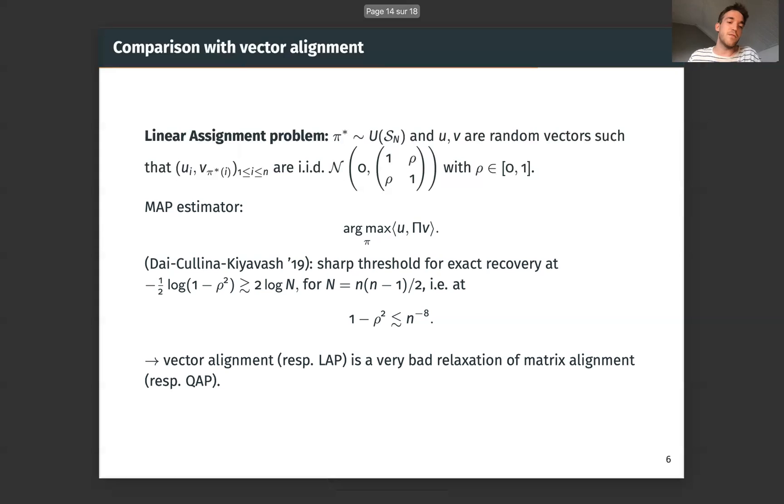In other words, we can say that vector alignment is a very bad relaxation of matrix alignment. So this is verified also in the experiments. If we want to align two graphs and we say, ah, we will see the edges as independent, and we'll take just an alignment of two vectors of size N(N-1)/2, the permutation we end up with has nothing to do with the node permutation in the general case. So this is not a relaxation that can work.